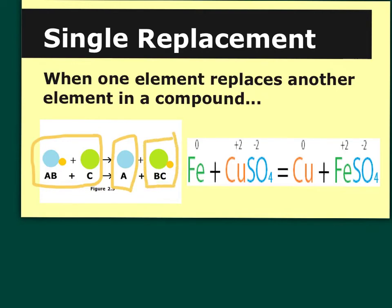B is now bound with C instead of with A. AB has separated — the bonds have broken — and now A is by itself, and the B element is now with C to form a new compound. So our products are totally different substances than what we started out with in our reactants.